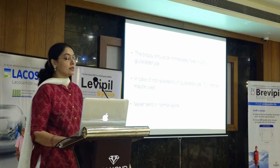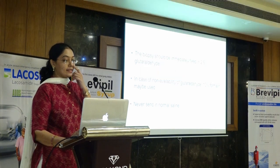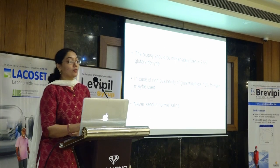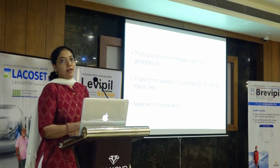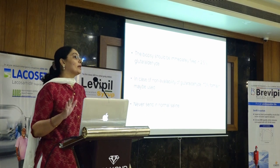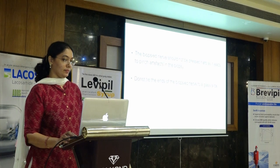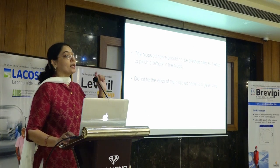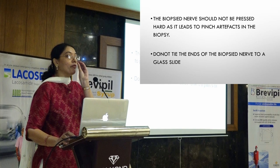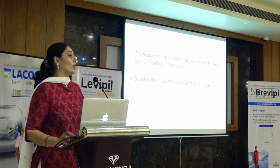Glutaraldehyde is preferred over formalin. If glutaraldehyde is not available, 10% formalin can be used but never saline. We prefer glutaraldehyde because if electron microscopy becomes necessary, formalin leads to artifacts under EM. Also, once the biopsy is done, it should not be pressed hard because it leads to pinch artifacts — a big blob of myelin will be seen in cross sections and we won't know whether to consider it axonal injury or artifact. Do not tie the ends of the biopsy nerve to a glass slide, as it will pull the nerve.